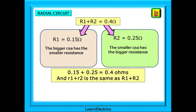R1 is the line, the bigger CSA, and this has the smaller resistance. The CPC, R2, has a smaller cross-sectional area and should have the bigger resistance. As this is a radial circuit, little r1 plus little r2 is the same as big r1 plus big r2.